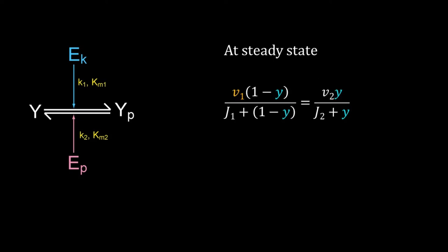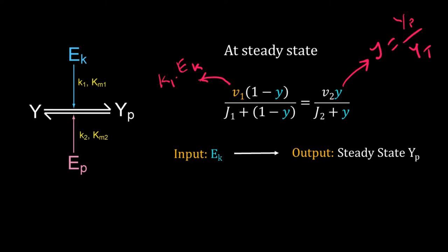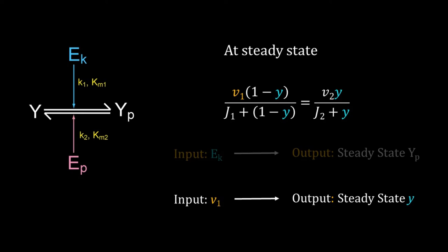Now it looks cleaner. Remember, E_k is the input and the steady state of Y_p is the output. The small y is equal to Y_p divided by Y_t, so steady state of small y is equivalent to the steady state of Y_p. Similarly, E_k is hidden in v1, so I can say v1 is input and the steady state of small y is the output of this switch.